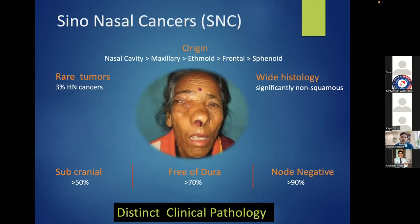The majority of the anterior skull base tumor load is shared by tumors arising from the sinonasal cavity—the nasal cavity and sinuses including maxillary, ethmoid, frontal and sphenoid. These are a distinct group of tumors: though rare at around 3% of all head and neck cancers, unlike other head and neck cancers where squamous cell carcinoma predominates, this group has wide histological variety. Squamous represents only about 50%; the rest are non-squamous cancers.